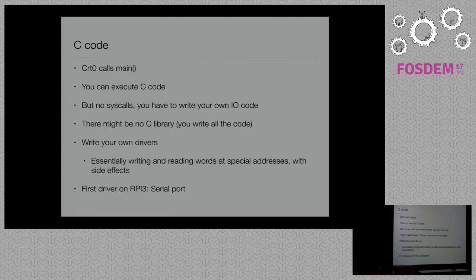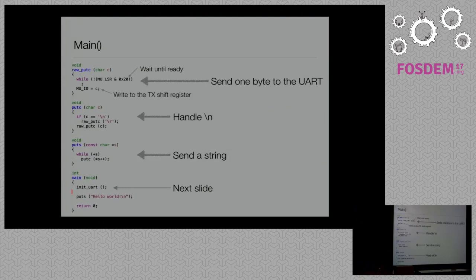Our C code starts with main, like a normal application. You can do whatever you want in C, but there is no C library, so you have to write everything yourself. In the main code, the UART serial console is initialized, and we do just a puts of 'hello world'. The puts function prints every character, converting backslash-n to backslash-n backslash-r. To print one character, we wait until the UART is ready, and when it is ready we write one byte to a specific memory-mapped location, which has a side effect of sending it over the serial line.